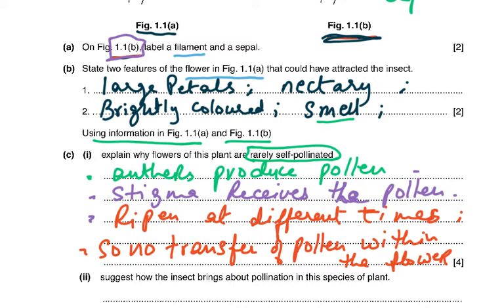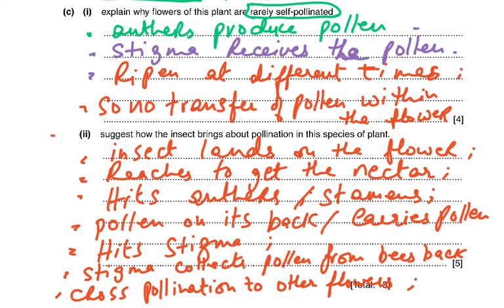Even if the pollen falls onto the stigma, the stigma is not ripe, so the pollen tube is not going to grow because the stigma is not mature enough to receive the pollen. The answer to part two — suggest how the insect brings about pollination — is: the insect lands on the flower to get nectar, hits the anthers, pollen is carried on its back, and then hits the stigma of another flower, resulting in cross pollination.